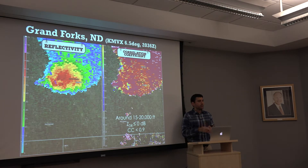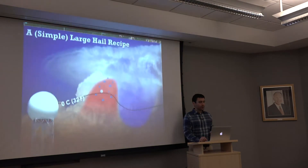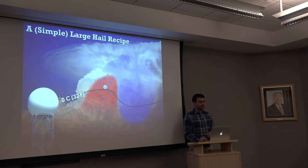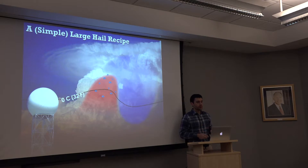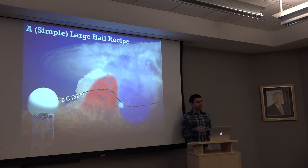Switching to correlation coefficient, we see values as low as 0.8 or even 0.7 — not so low we're worried about non-meteorological scatterers, since reflectivity in that area is pretty high. That low correlation coefficient is the large hail growth signature right about where we'd expect the updraft to be at these cold temperatures aloft. As hailstones grow larger and develop interesting shapes, correlation coefficient is driven downward, telling us some pretty big hailstones are going aloft.